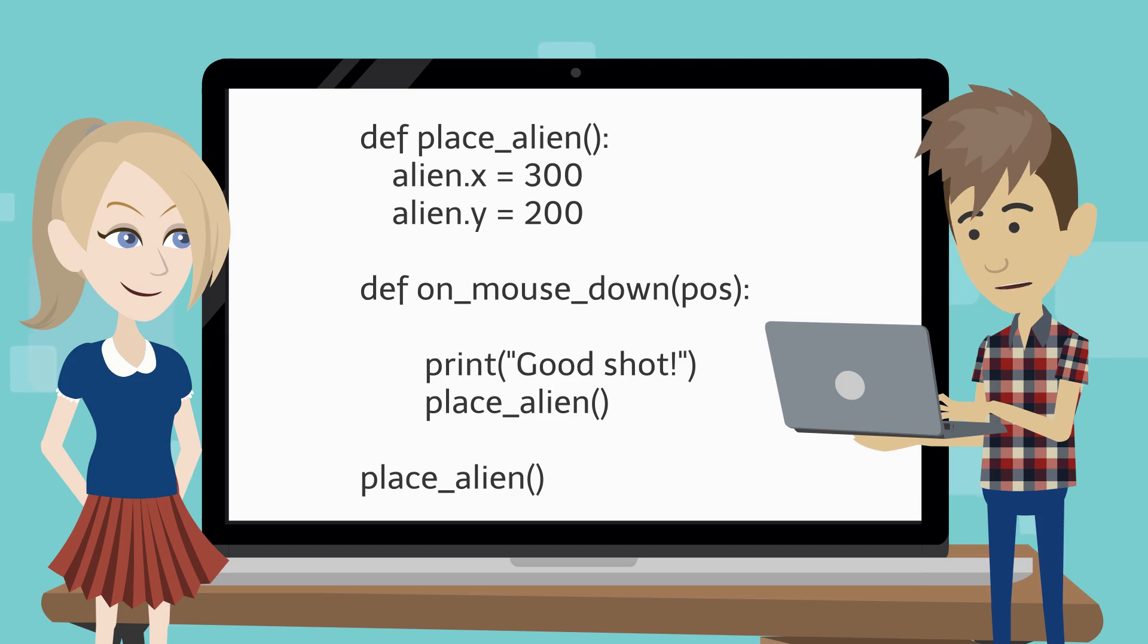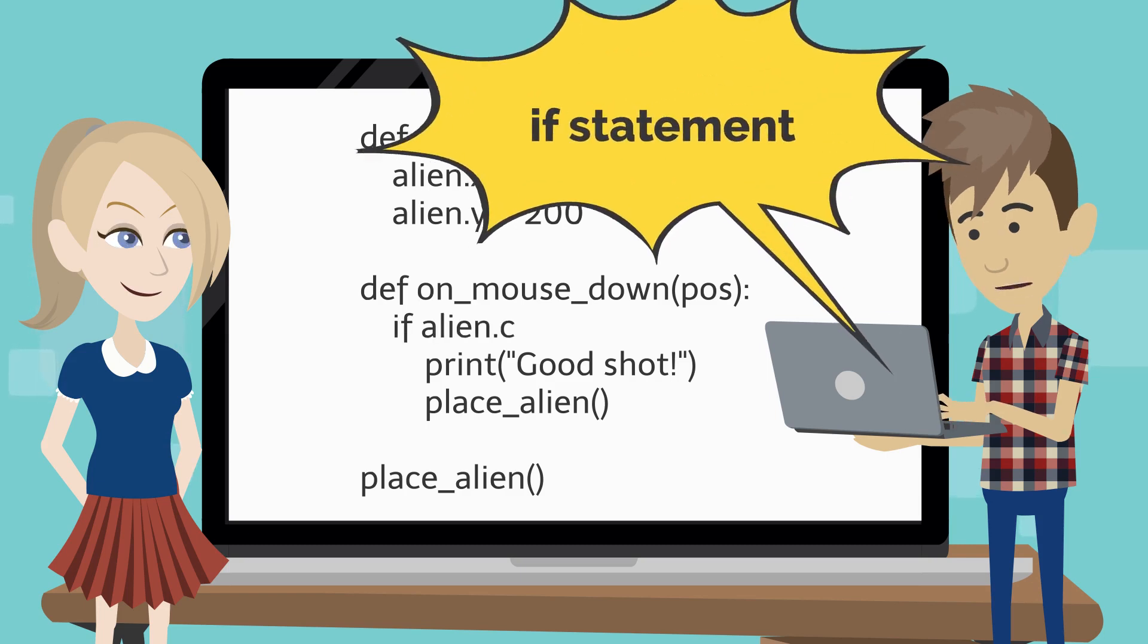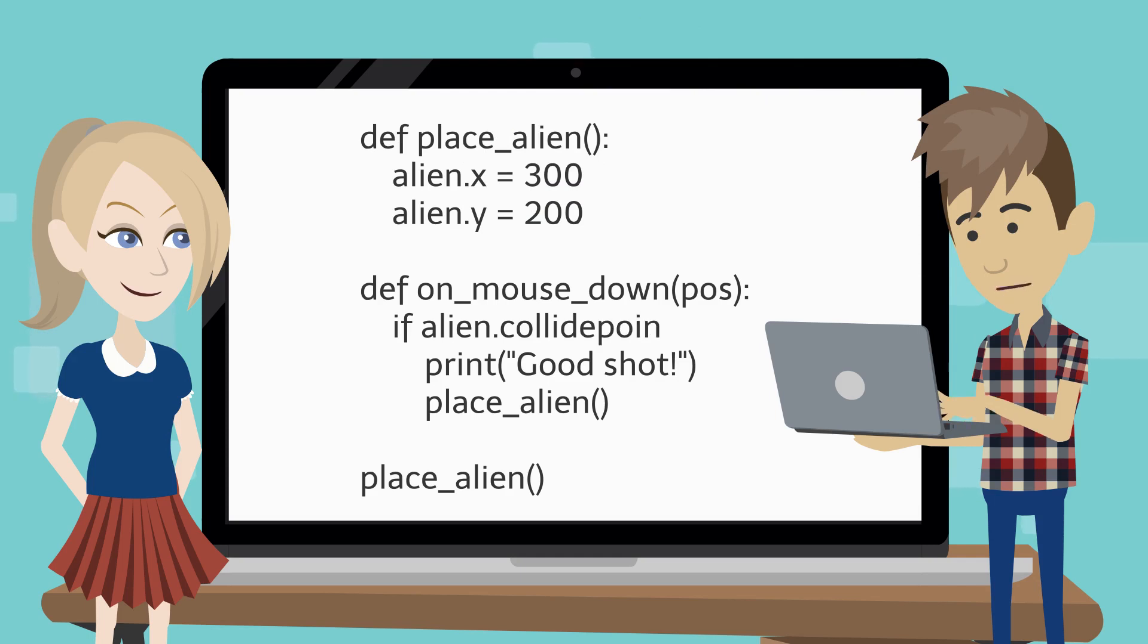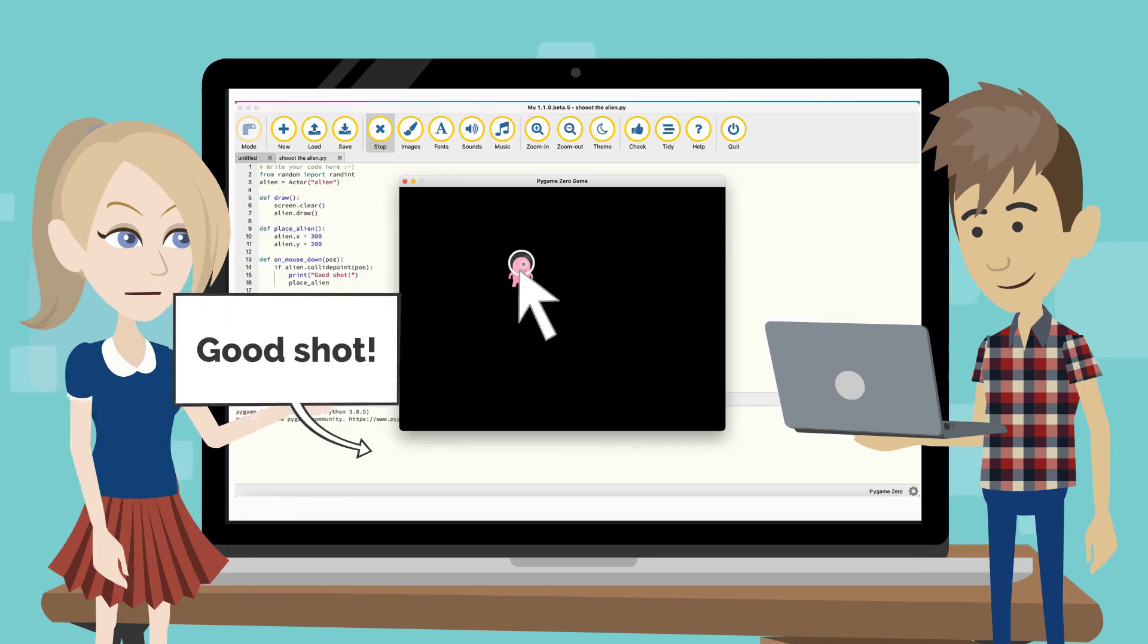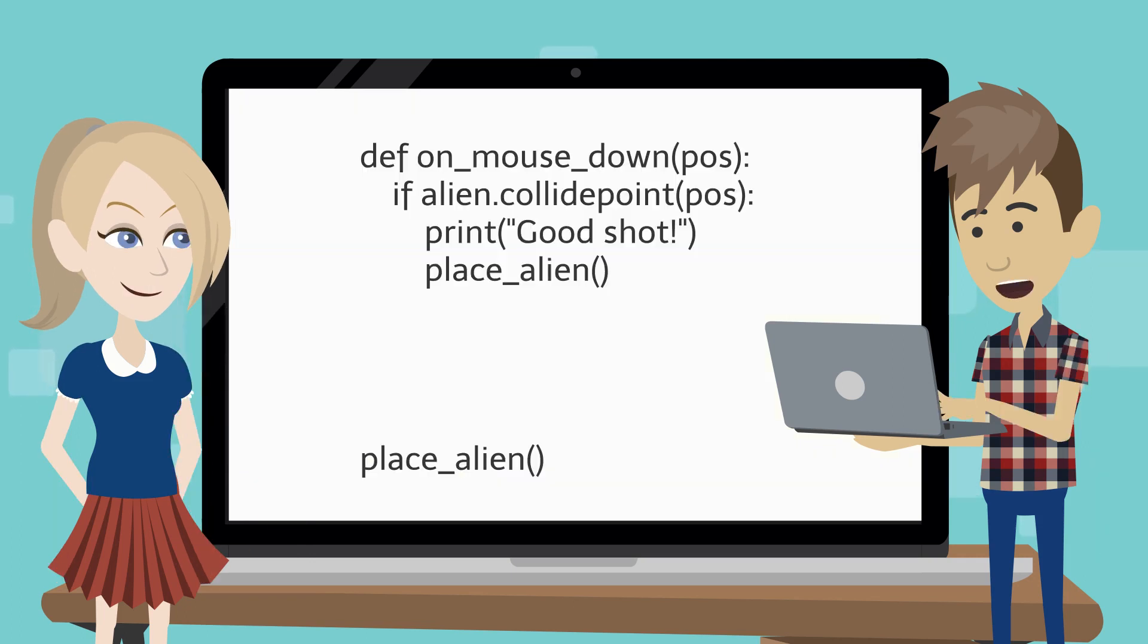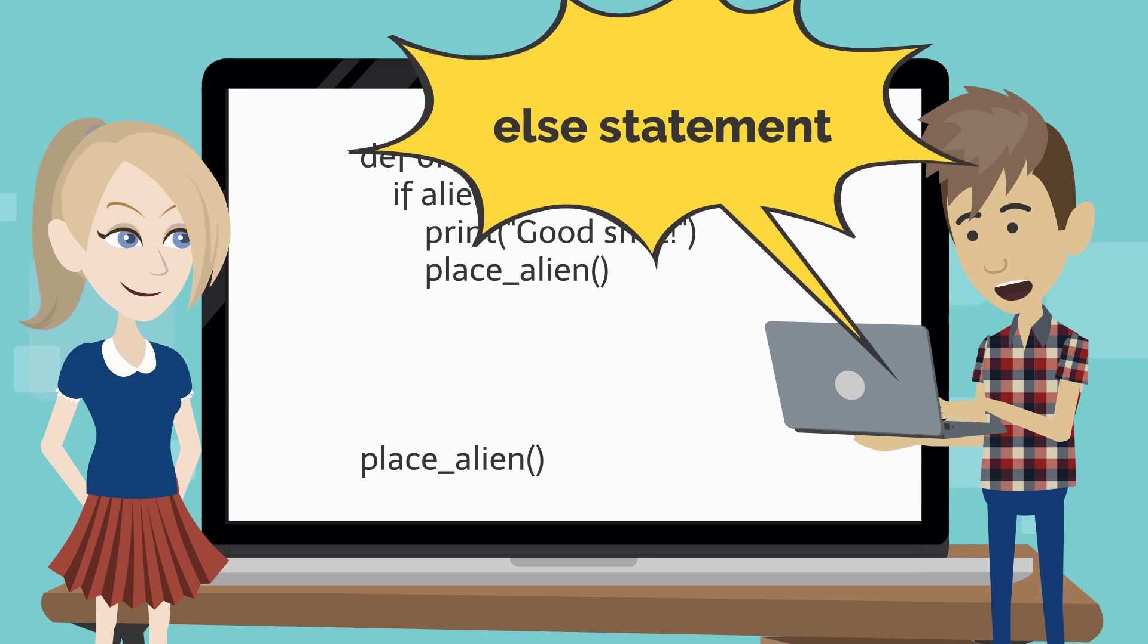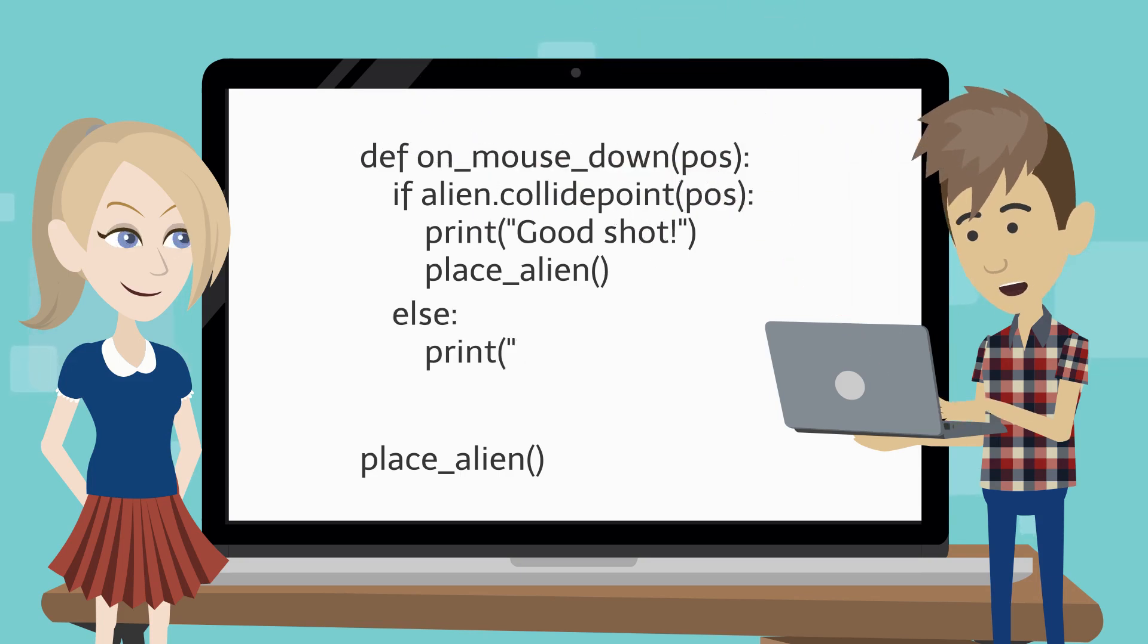We can do this by amending the code to include an if statement. This function checks if the cursor is in the same position as the alien. Make sure the bottom two lines now start with eight spaces. At this point, the good shot message will only be displayed if the player actually hits the alien. Add some more logic to our code so that if the player misses a shot and don't click on the alien, the you've missed message is displayed and it quits the game.